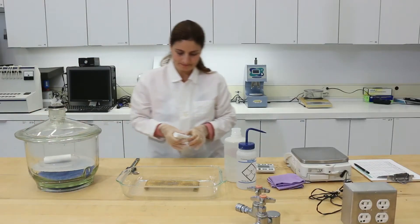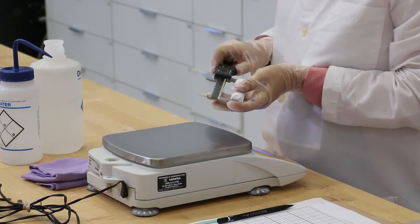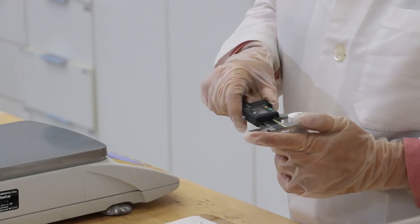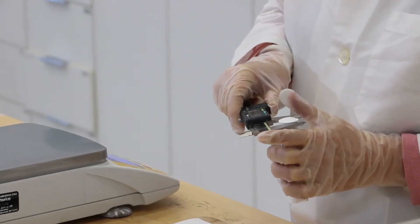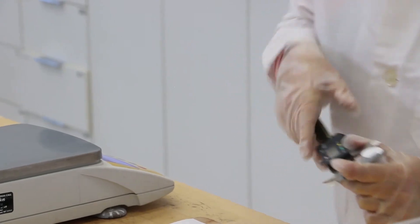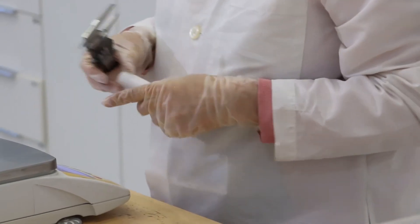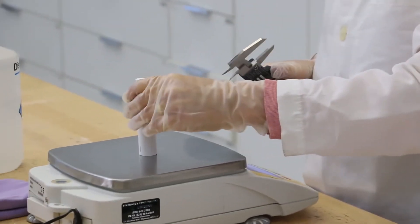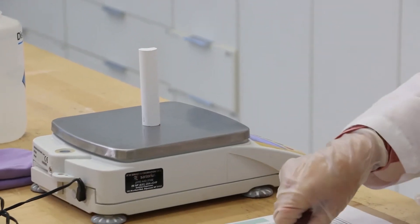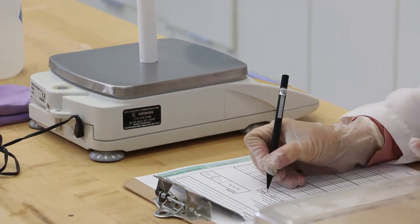Once constant weight is reached, measure the length and diameter of each specimen to the nearest 0.1 mm using the caliper. Record the values on the data collection sheet. Weigh the dry specimen to the nearest 0.01 g and record as M0 on the data collection sheet.